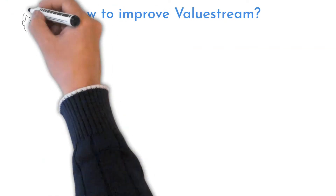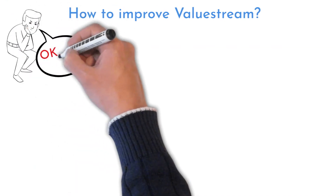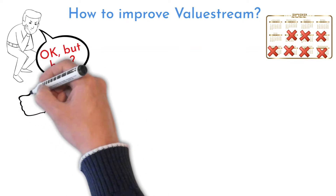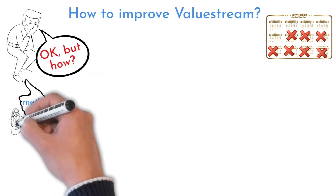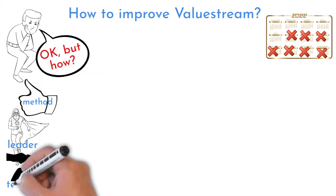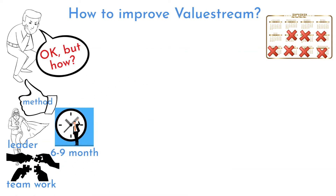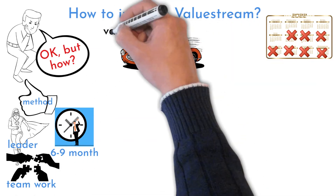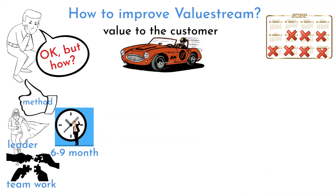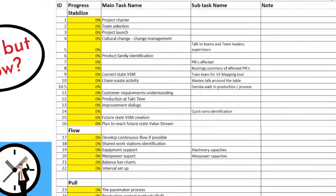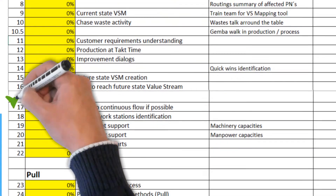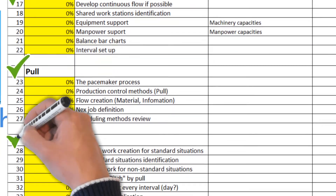Improving a value stream is not an easy task. It can take several months to pass through improvement steps, requiring a good method, an experienced project leader, dedicated team effort, and about six to nine months of work. But the result is worth it — value just flows through the value stream. There are four phases: Stabilize, Flow, Pull, and Level.